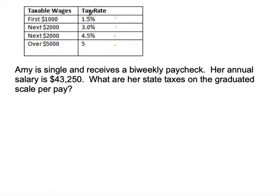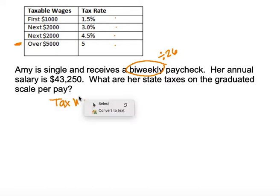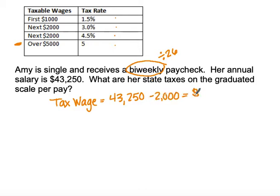Amy is single and receives a bi-weekly paycheck, and her annual salary is $43,250. Bi-weekly means she's going to get paid 26 pays per year. What are her state taxes on the graduated scale per year? Because she is at $43,250 she's at tier four. The first thing we're going to figure out is her exemptions. Her taxable wage is $43,250, and since she's single with no dependents we take $2,000 out, making her taxable wage $41,250.